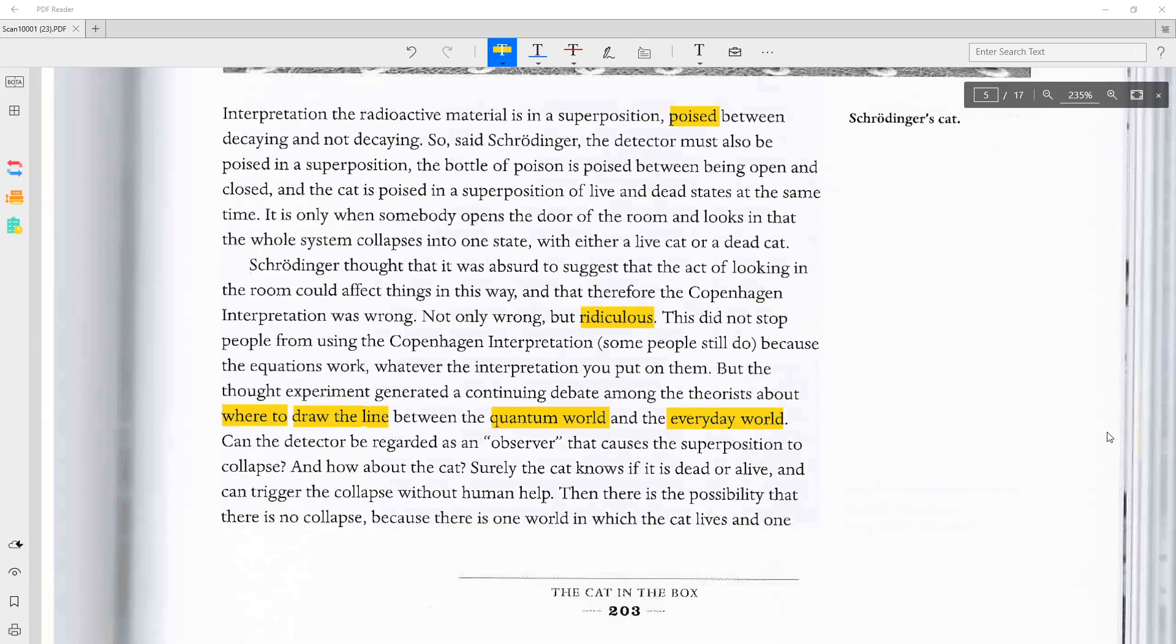the radioactive material is in a superposition, poised between decaying and not decaying. So, said Schrödinger, the detector must also be poised in a superposition. The bottle of poison is poised between being open and closed and the cat is poised in a superposition of live and dead states. At the same time, it is only when somebody opens the door of the room and looks in that the whole system collapses into one state with either a live cat or a dead cat.